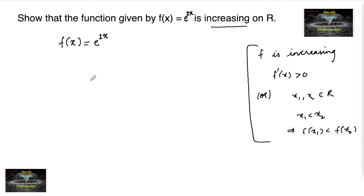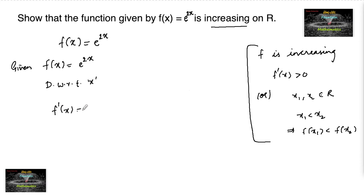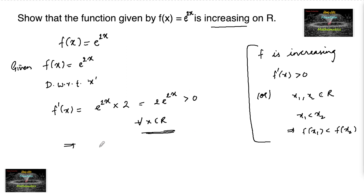Let us consider the first method. f(x) = e^(2x), and differentiating with respect to x, we get f'(x) = e^(2x) multiplied by the differentiation of 2x, which is 2. So f'(x) = 2e^(2x). For any x belonging to ℝ, e^(2x) is always positive and is multiplied by 2, a positive quantity, so it is always positive. Hence we can conclude that f is increasing on real numbers.